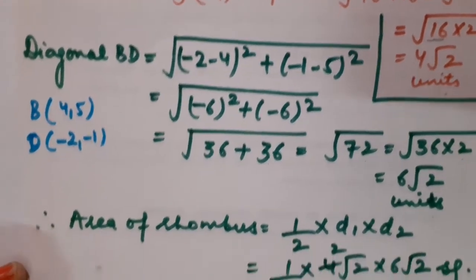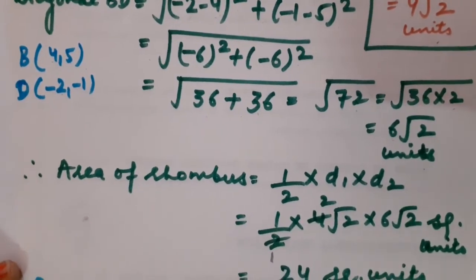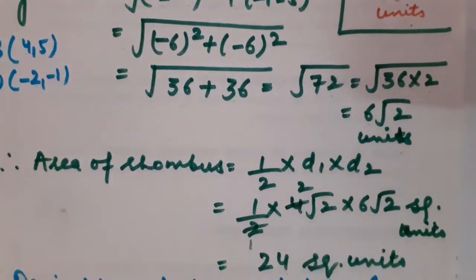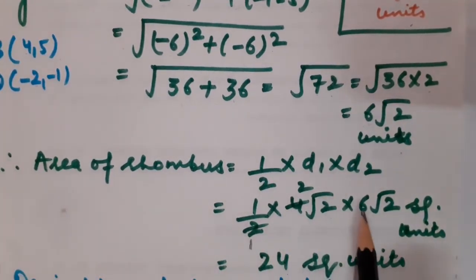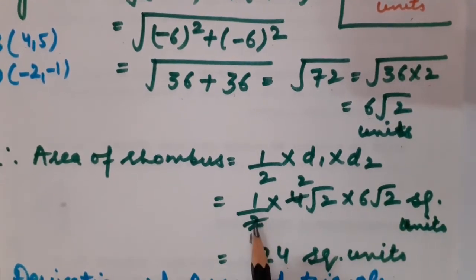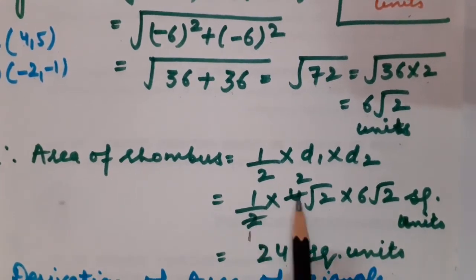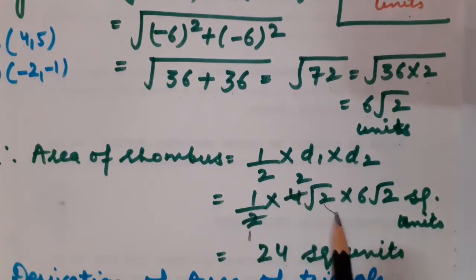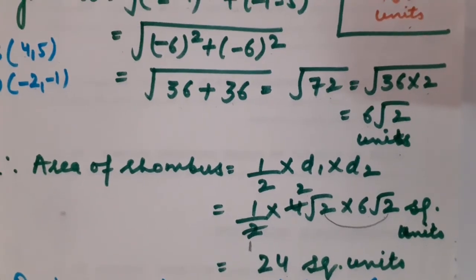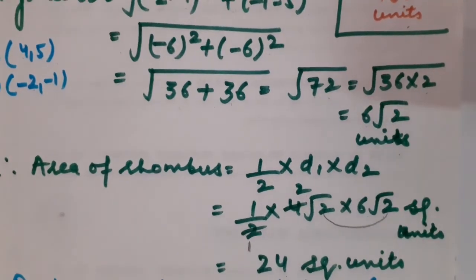Area of rhombus = half × d₁ × d₂ = half × 4√2 × 6√2 = half × 4 × 6 × 2 = half × 48 = 24 square units.